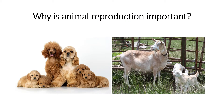Why is animal reproduction important? All living creatures reproduce — it is what makes living different from non-living. When an organism reproduces, it ensures that the species will continue on. Without the continuation of the species, they would become extinct.